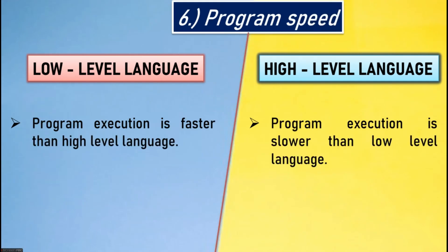Sixth point: program speed. In low level language, program execution is faster than high level language because the language is directly understood by the computer, so execution is fast. In high level language, program execution is slower than low level language.